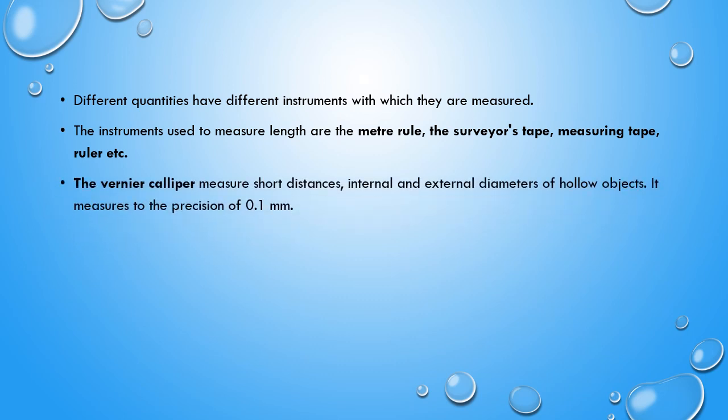We also have the vernier caliper, which is used to measure short distances and the internal and external diameters of hollow objects. It measures to a precision of 0.1 mm. It has two jaws used to measure the internal and external diameter of any given hollow object — for example, a hollow cylinder.